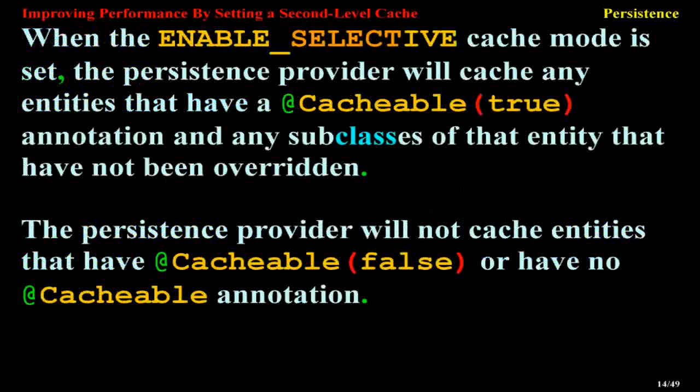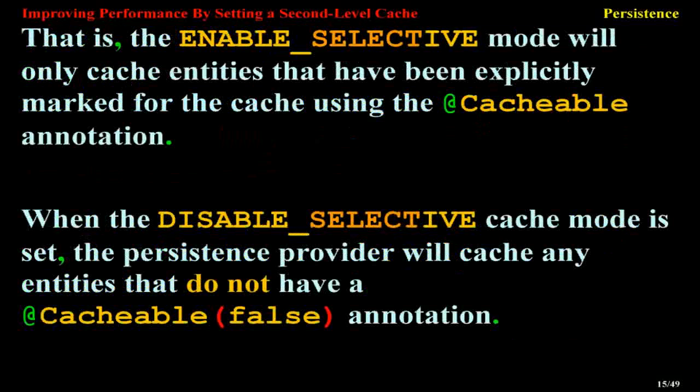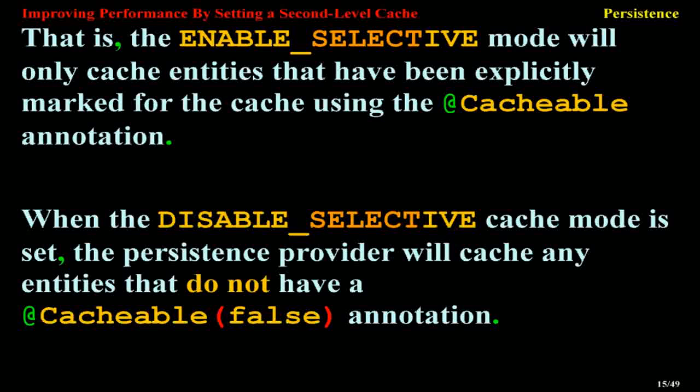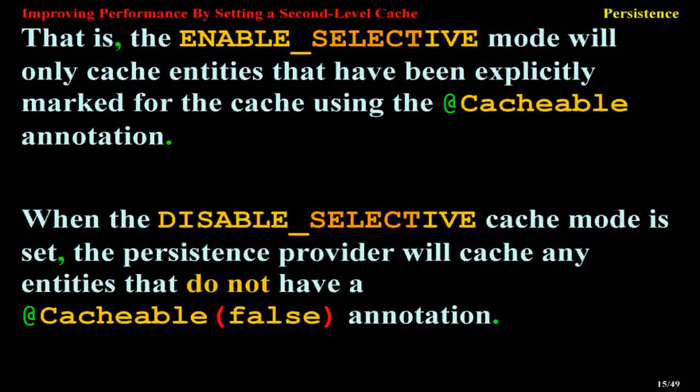When the ENABLE_SELECTIVE cache mode is set, the persistence provider will cache any entities that have a @Cacheable(true) annotation and any subclasses of that entity that have not been overridden. The persistence provider will not cache entities that have @Cacheable(false) or have no @Cacheable annotation. That is, the ENABLE_SELECTIVE mode will only cache entities that have been explicitly marked for the cache using the @Cacheable annotation.